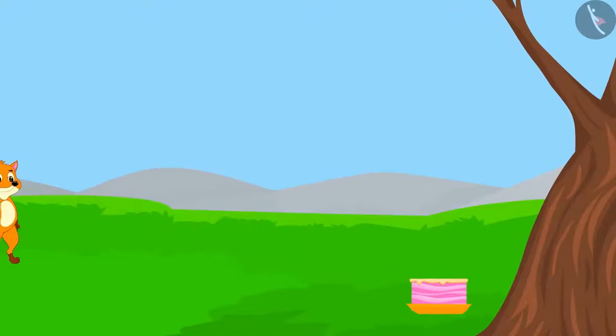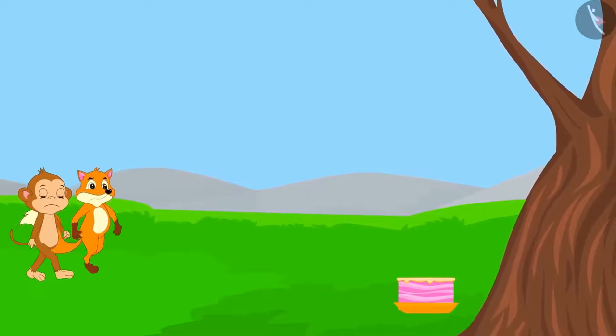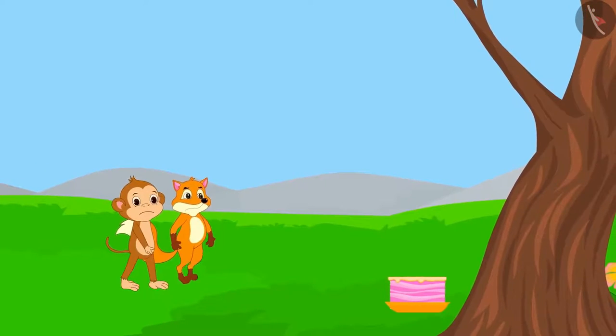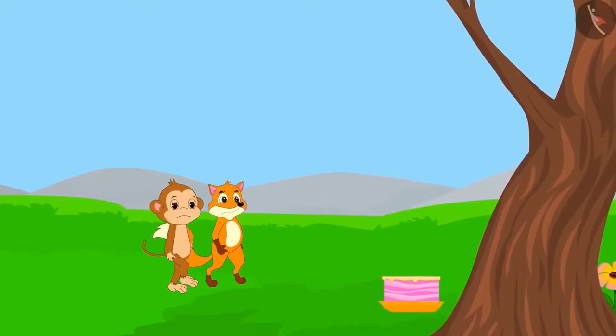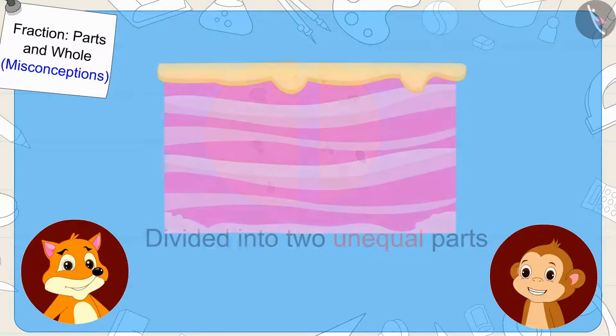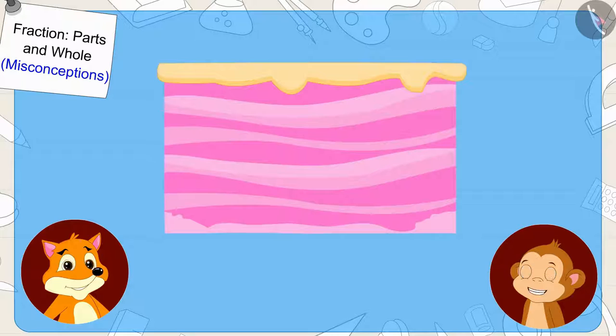Now, while searching for the way out, they found a rectangle-shaped cake. The cake was quite small. Babban understood that the fox had divided the chapati in unequal parts. So, this time, he told the fox that she would have to make equal parts of the cake.